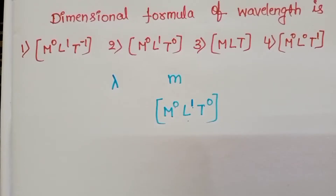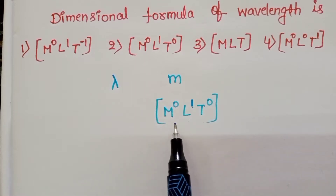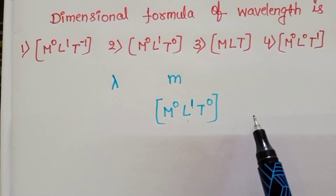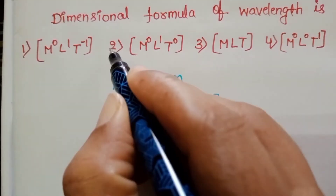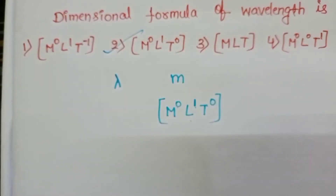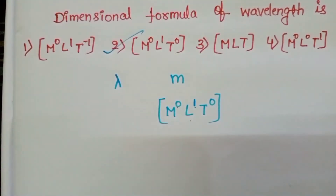Similarly, distance, displacement, perimeter, circumference, and light year — all these quantities have the same dimensional formula. So the correct option is the second option: M power 0, L power 1, T power 0.